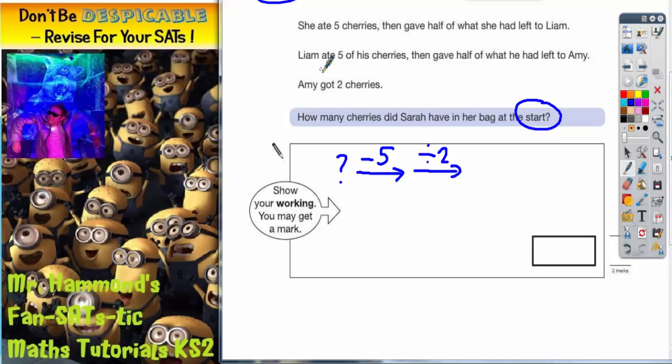Liam then ate five of what he's got left. So we need another arrow and he's eating five, so we need to subtract another five. Then he gave away half of what he had left. So if he's losing half of his cherries, we're dividing by two again. So we've lost Sarah's cherries, we've lost Liam's cherries, and what number we would be on now would be whatever Amy's got left.